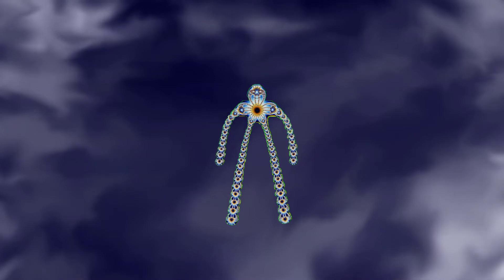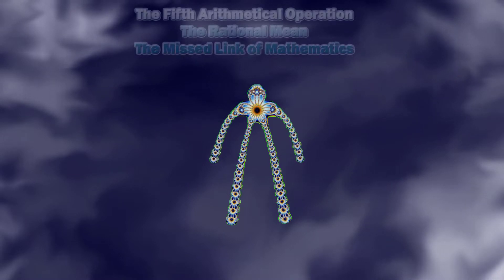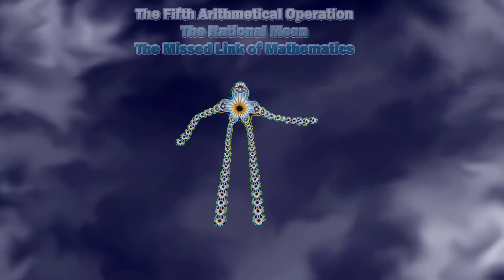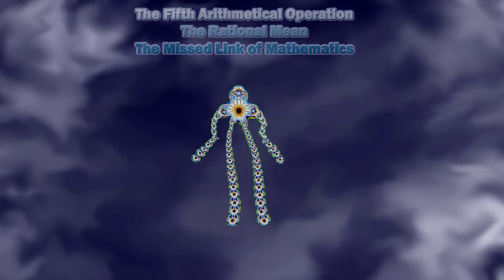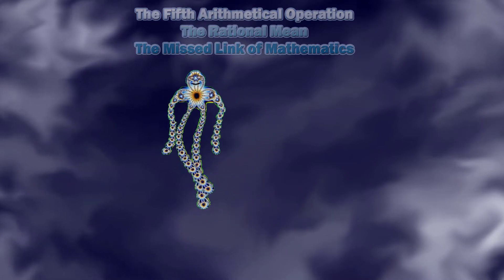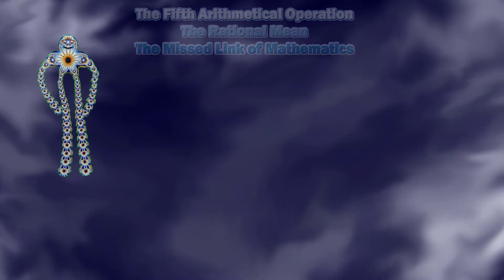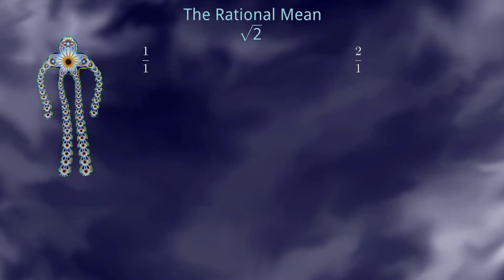You might already know the fifth mathematical operation or the rational mean, but if you don't know that, no problem because this is a pretty straightforward subject. The rational mean is simply the sum of the numerators and denominators of a set of rationals. Now we will see how to use the rational mean concept for approximating irrational numbers. I will start with the most basic example, the square root of two, given two initial approximations by defect and excess to the square root of two.